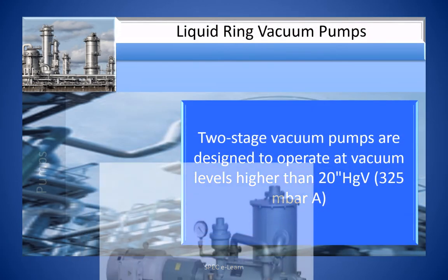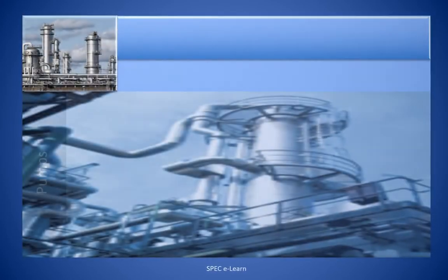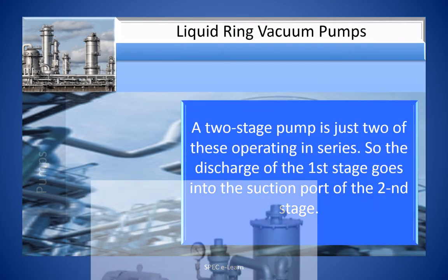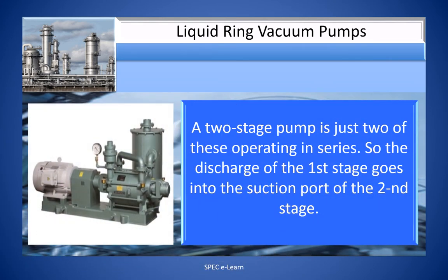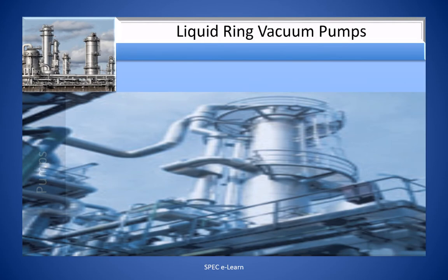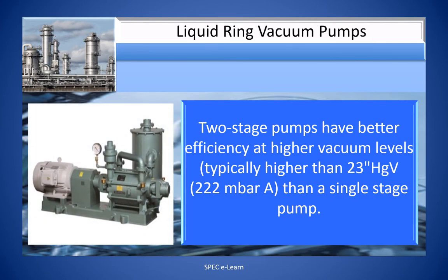Two-stage vacuum pumps are designed to operate at vacuum levels higher than 20 inches of mercury vacuum. A two-stage liquid ring pump is just two single stages operating in series, so the discharge of the first stage goes into the suction port of the second stage. Two-stage pumps have better efficiency at higher vacuum levels, typically higher than 2 to 3 inches Hg vacuum, than a single-stage pump.